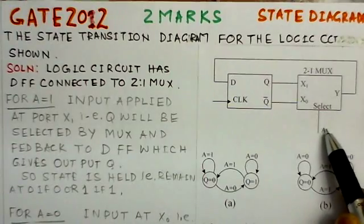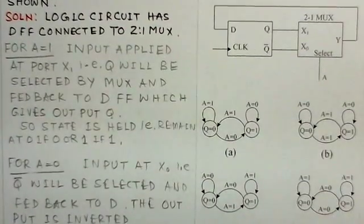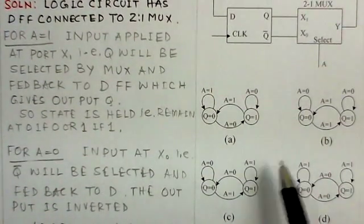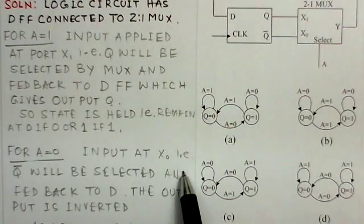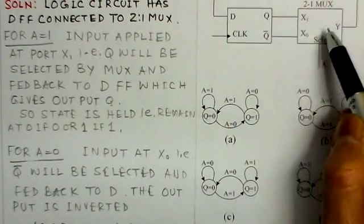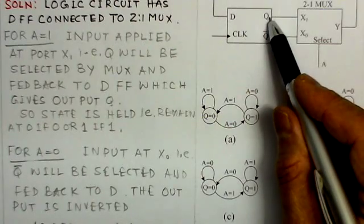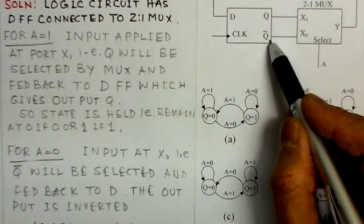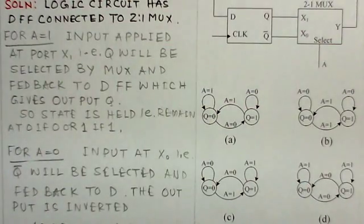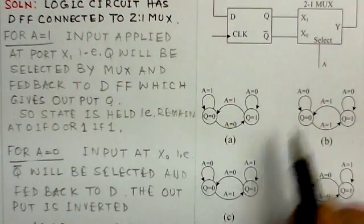For A equals 1, the state of Q remains at whatever value it is — the state is held. For A equals 0, input X0, that is Q-bar, will be selected and fed back to the D input. The output is the inverted output — whatever is the output at Q, it is inverted. So when A is 0, the transition from one state to the other state takes place.